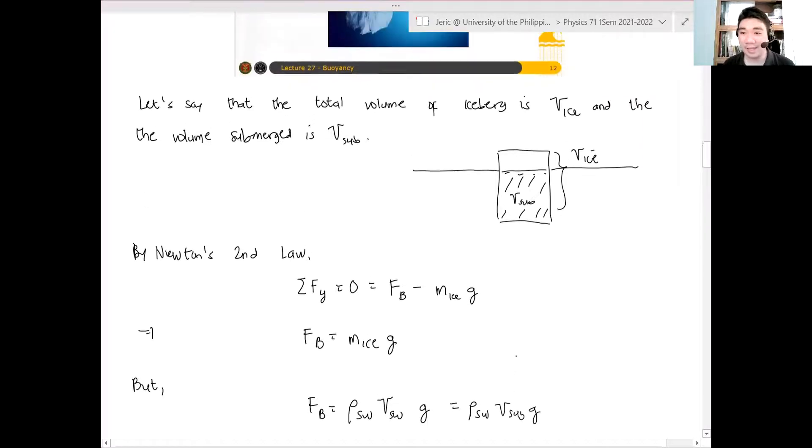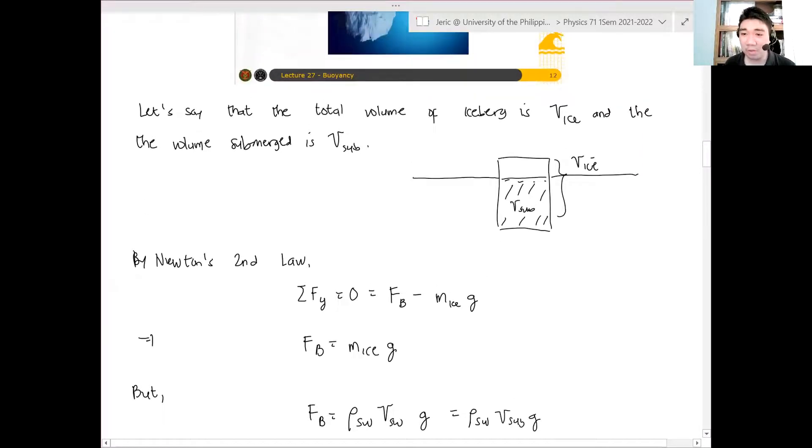Or I should say volume of seawater that is displaced. But we know that this is simply density of seawater, volume of the submerged part times g. Again, only the submerged part is important. The top part is not submerged, therefore, this is the only part you need to use.